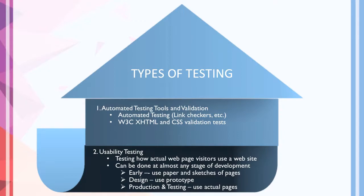Types of testing in the testing stage: first, automated testing tools and validation can be used, such as link checkers or the World Wide Web Consortium HTML and CSS validation tests. Second, usability testing — testing how actual web page visitors use a website. Tests can be done at almost any stage of development: early stage, design stage, production stage, or testing stage — testing actual pages.